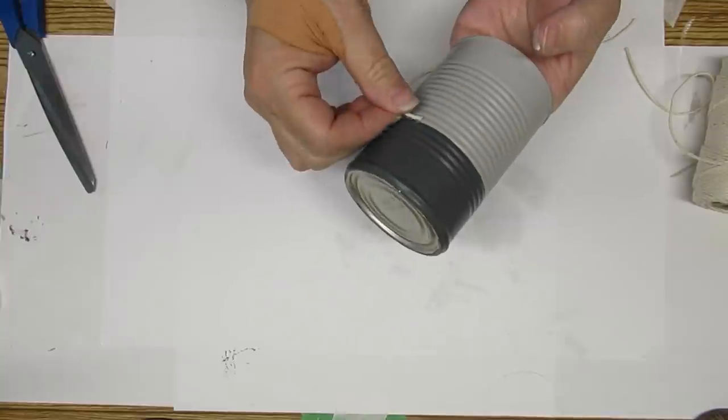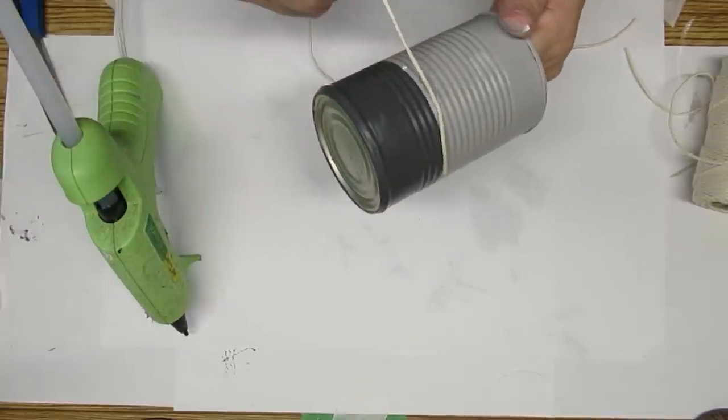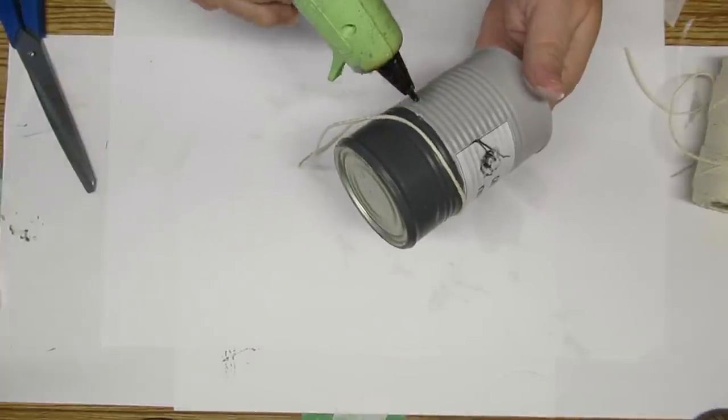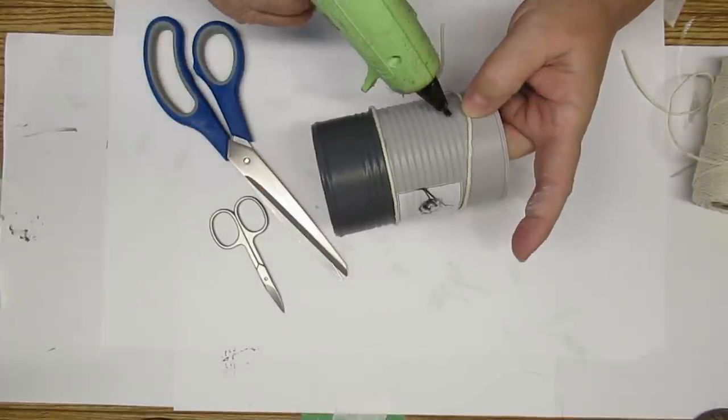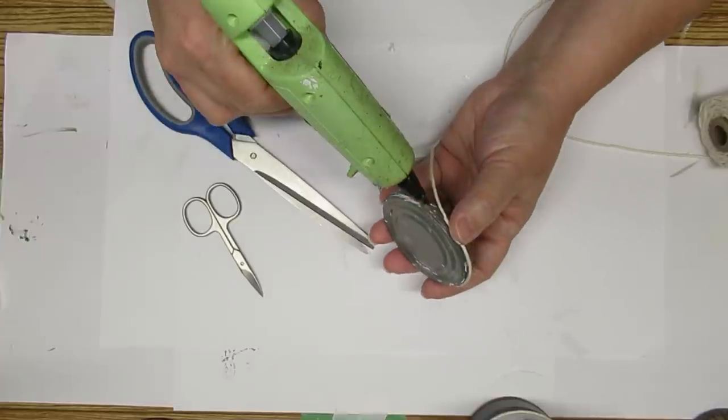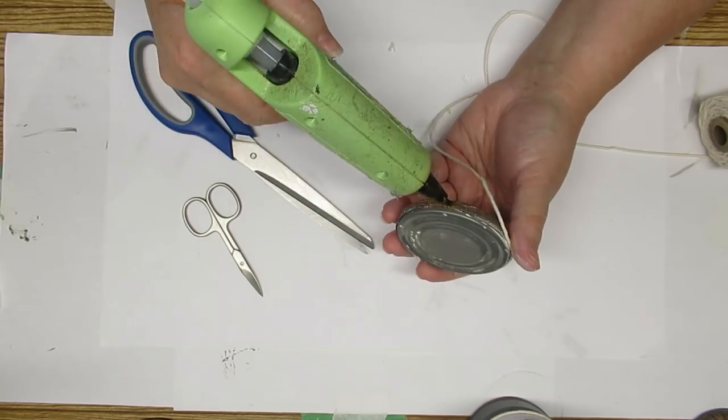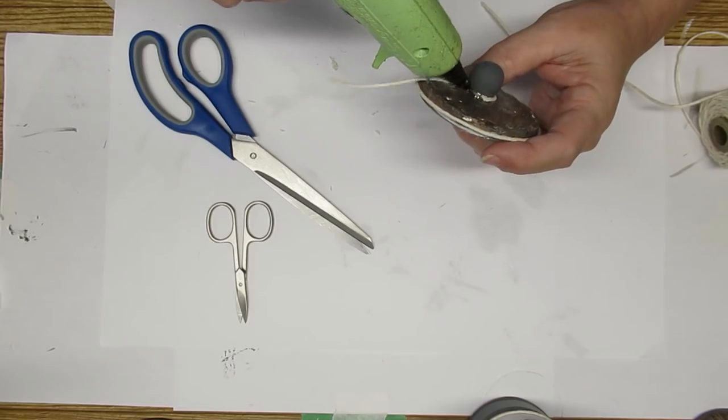The last thing I'm going to do is add some details with this white butcher's twine. I'm using hot glue to start it and then I'm just going to put it all the way around underneath the label and then I'm also going to add one on top of the label and I'll add a little bit to the lid as well. I also added some to the bottom of the bead just to hide where the hot glue is.